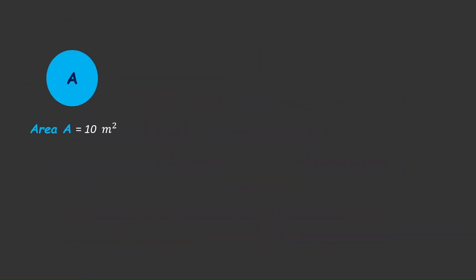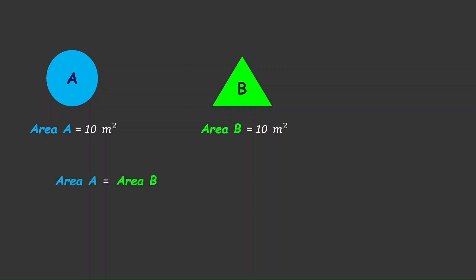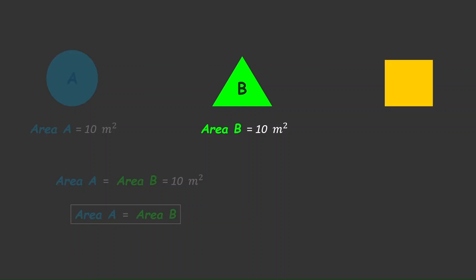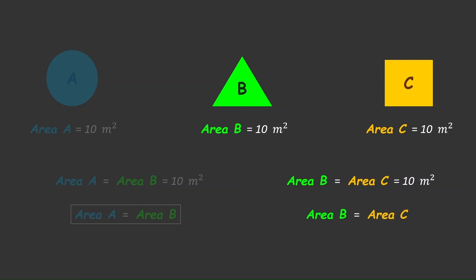If we have a circle A whose area is 10 square meters, and we have another triangle B whose area is also 10 square meters, then we can say that area of A is equal to area of B, which equals 10 square meters. Now, let's take another example of a square C having area 10 square meters again. With the same idea, we can say area B is equal to area C, which is equal to 10 square meters.